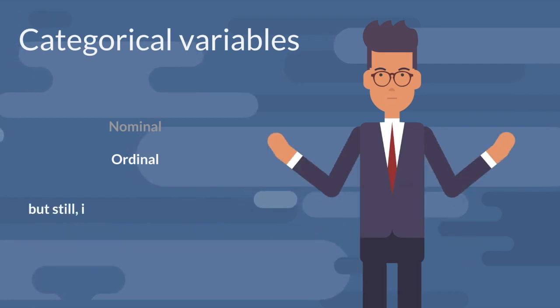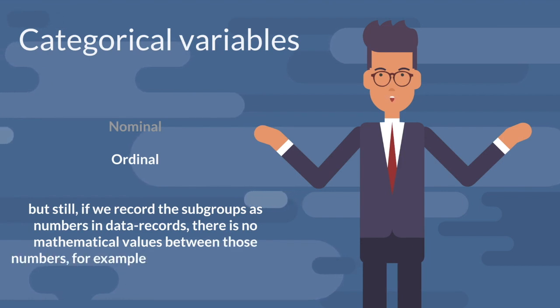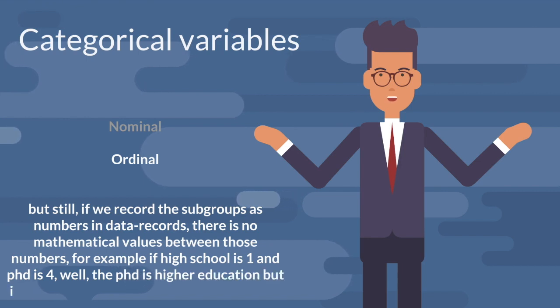But still, if we record the subgroups as numbers in data records, there is no mathematical values between those numbers. For example, if high school is 1 and PhD is 4, well, the PhD is higher education but it is not 4 times greater than high school is 1.